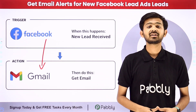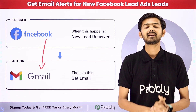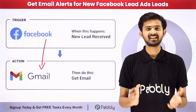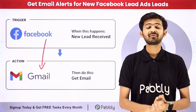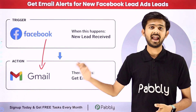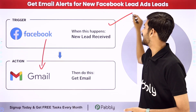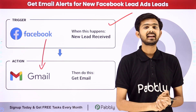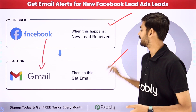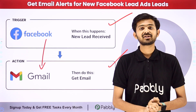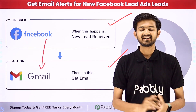For building this connection I am going to use Pably Connect, which is an amazing software for automation and integration. In Pably Connect I have to use Trigger and Action. In the Trigger application I am going to use Facebook lead ads, and in the Action application I am going to use Gmail. Let me take you to my computer screen to show how I am going to build this connection.